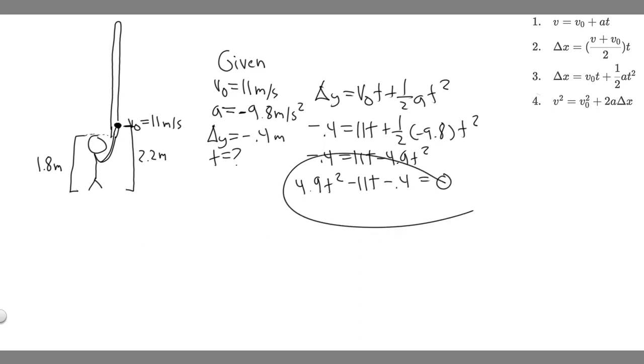And so this is in quadratic form, meaning what you can do is solve for t, which is what we want to do. We're trying to find time. And you can use the quadratic formula. I'm actually not going to use the quadratic formula, but you can if you'd like. I think the easier way to do this is just by plugging it into your graphing calculator. So you just want to take this function, 4.9x² or t², minus 11t, and then minus 0.4.